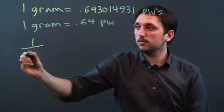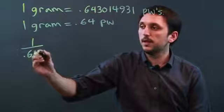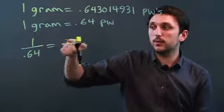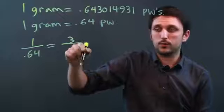So we say 1 is to 0.64 as—well, let's say we want to figure out how many penny weights are in three grams.